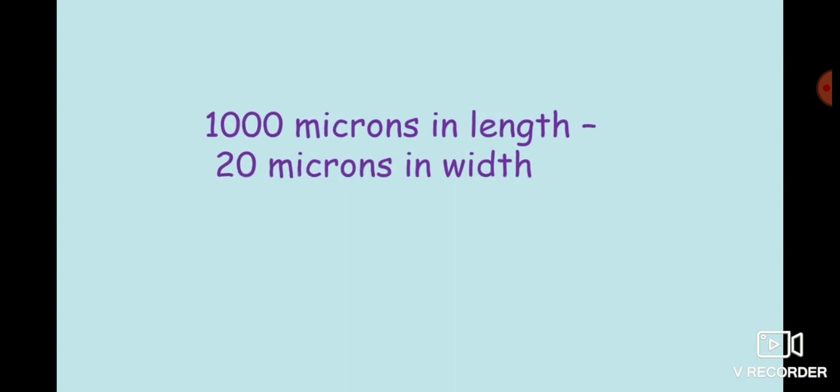Coming to the size of these lampbrush chromosomes, in many animals, lampbrush chromosomes may be more than 1000 microns in length and 20 microns in width. In some salamander oocytes, the lampbrush chromosomes may reach a length of 5900 microns. Some lampbrush chromosomes are three times longer than polytene chromosomes.